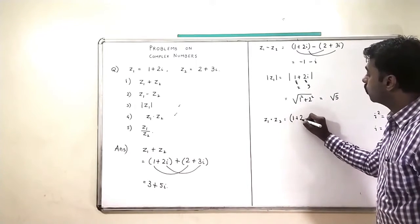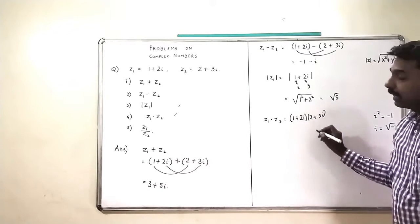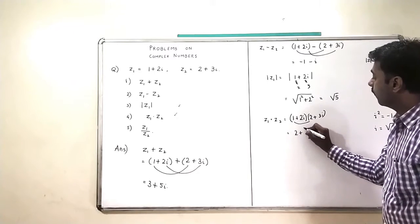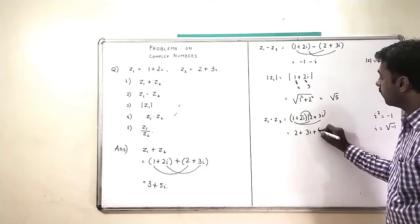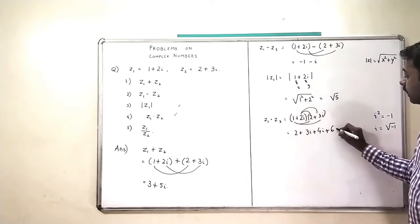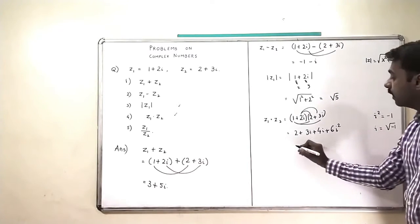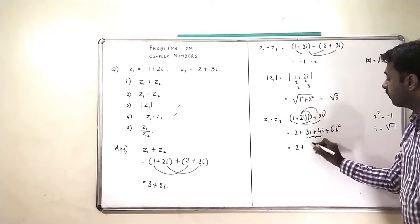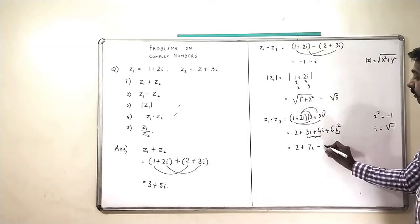So I am going to write 1 plus 2i multiplied by 2 plus 3i. And therefore I will get 2 plus 3i plus 4i plus 6i squared. But I know that i squared is minus 1. So I am going to get 2 plus 7i, and i squared is minus 1, so I am going to get a minus 6.